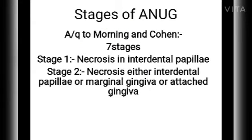According to Morning and Cohen, there are seven stages for ANUG. In stage 1, necrosis is present in the interdental papilla. In stage 2, necrosis is present in either the interdental papilla, marginal gingiva, or attached gingiva.